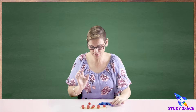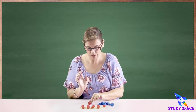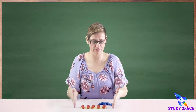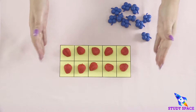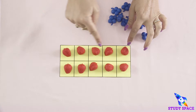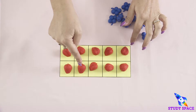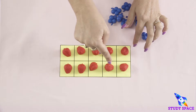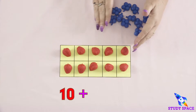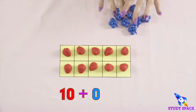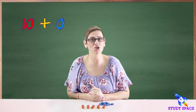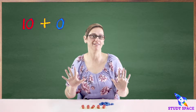Now I've got all my strawberry friends — one, two, three, four, five, six, seven, eight, nine, ten strawberries plus zero blueberry friends also equals ten.